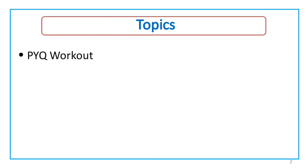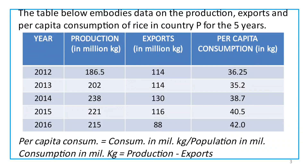We will discuss the concept of averages. The table below presents data on the production, exports, and per capita consumption of rice in country P for 5 years. We will discuss the details of the 5th year — the production, exports, and per capita consumption.